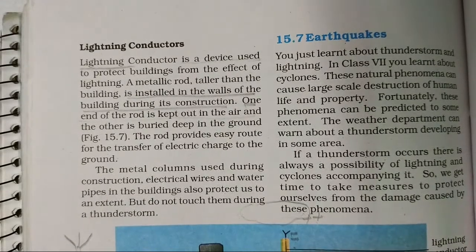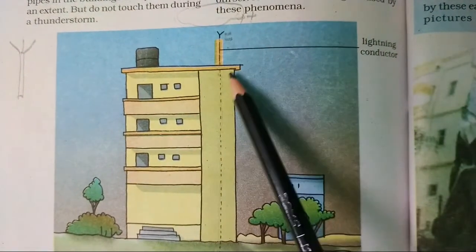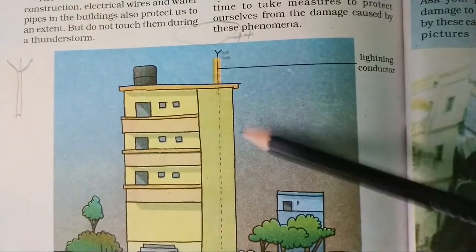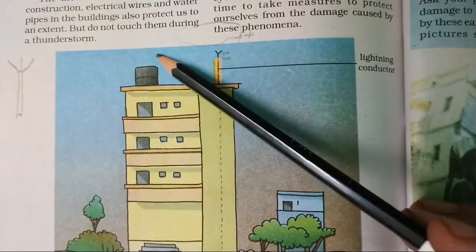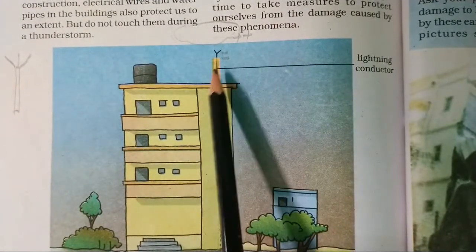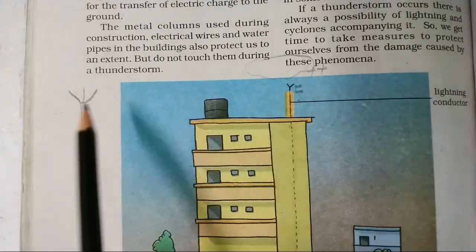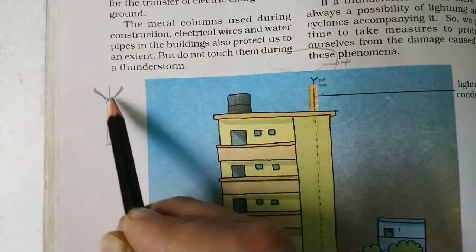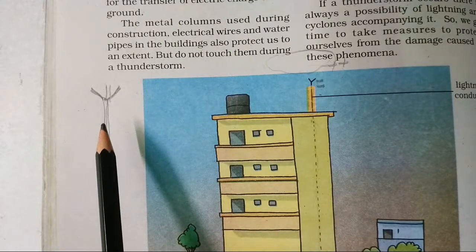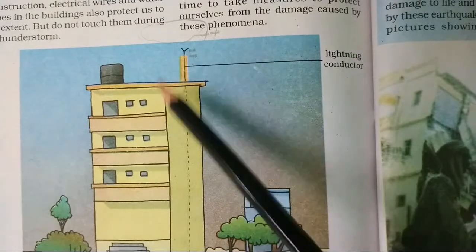To protect ourselves, a lightning conductor is used. If there is a tall building and lightning strikes, it can enter and destroy the building. To protect it, a lightning conductor is connected at the top — it has a long rod with a pointed end, which you might have seen on buildings. This rod is connected through a metal pipe running down the side of the building and deep into the ground.